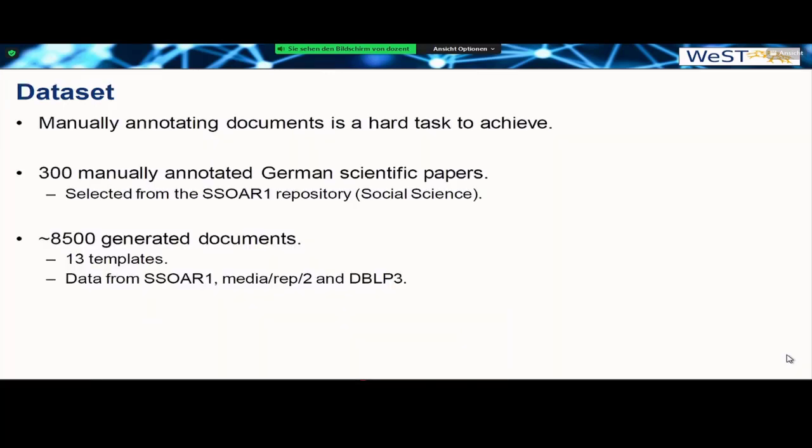For the dataset, because there is no such publicly available annotated German dataset, manually annotating documents is a very hard task because we don't want to only annotate the text information, but also annotate images, which is a very important task. For that reason, we only annotated 300 documents manually that are collected from the SSOAR dataset, specifically from the social science repository. Then, in order to tackle that particular issue, we generated documents and we collected 13 most commonly used templates in the social sciences for German language. Then we generated scientific documents using these templates from data collected from the SSOAR, MediarXiv, and DBLP repositories.